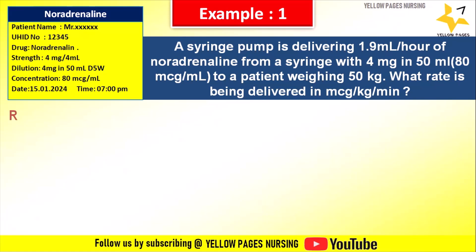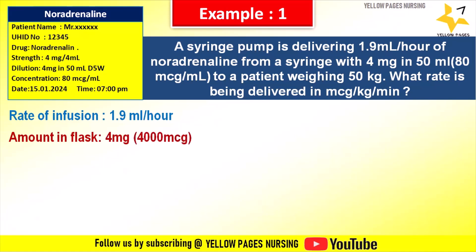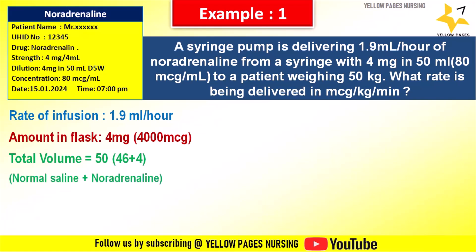The rate of infusion is 1.9 ml per hour. Amount in flask is 4 mg, which is 4000 mcg. Total volume is 50 ml — that is 46 ml of normal saline plus 4 ml of noradrenaline. Body weight is 50 kg and time is 60 minutes.